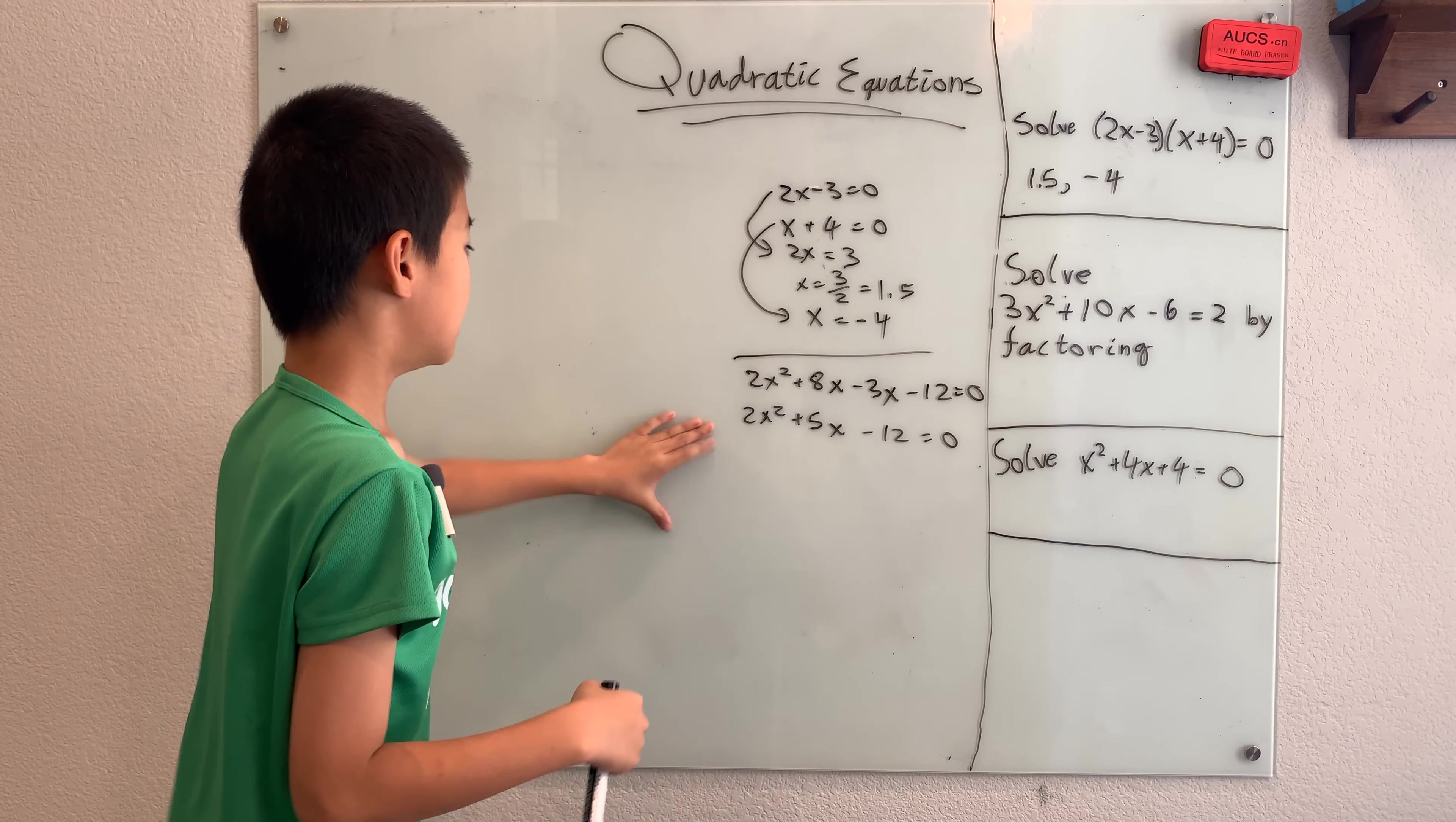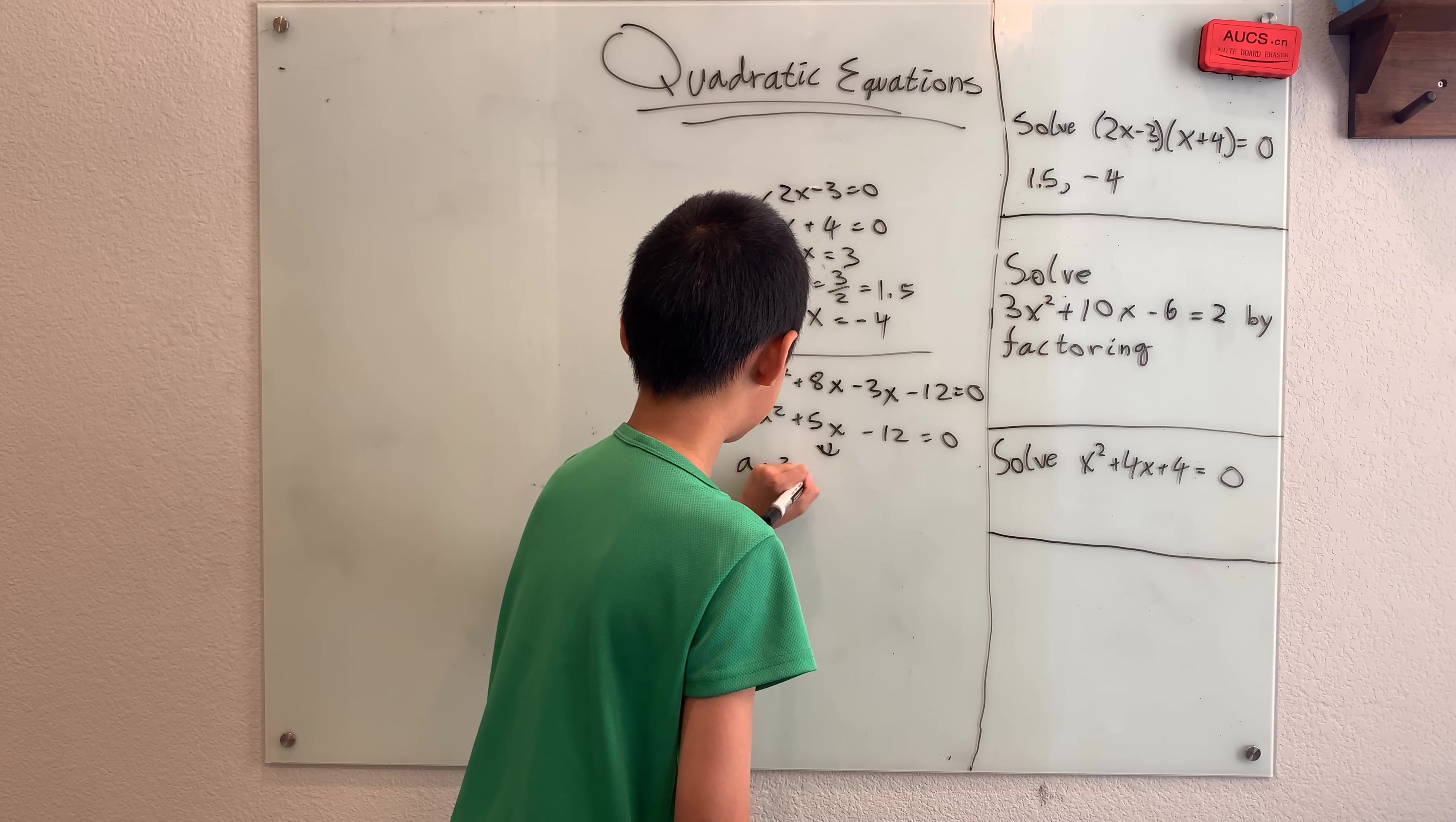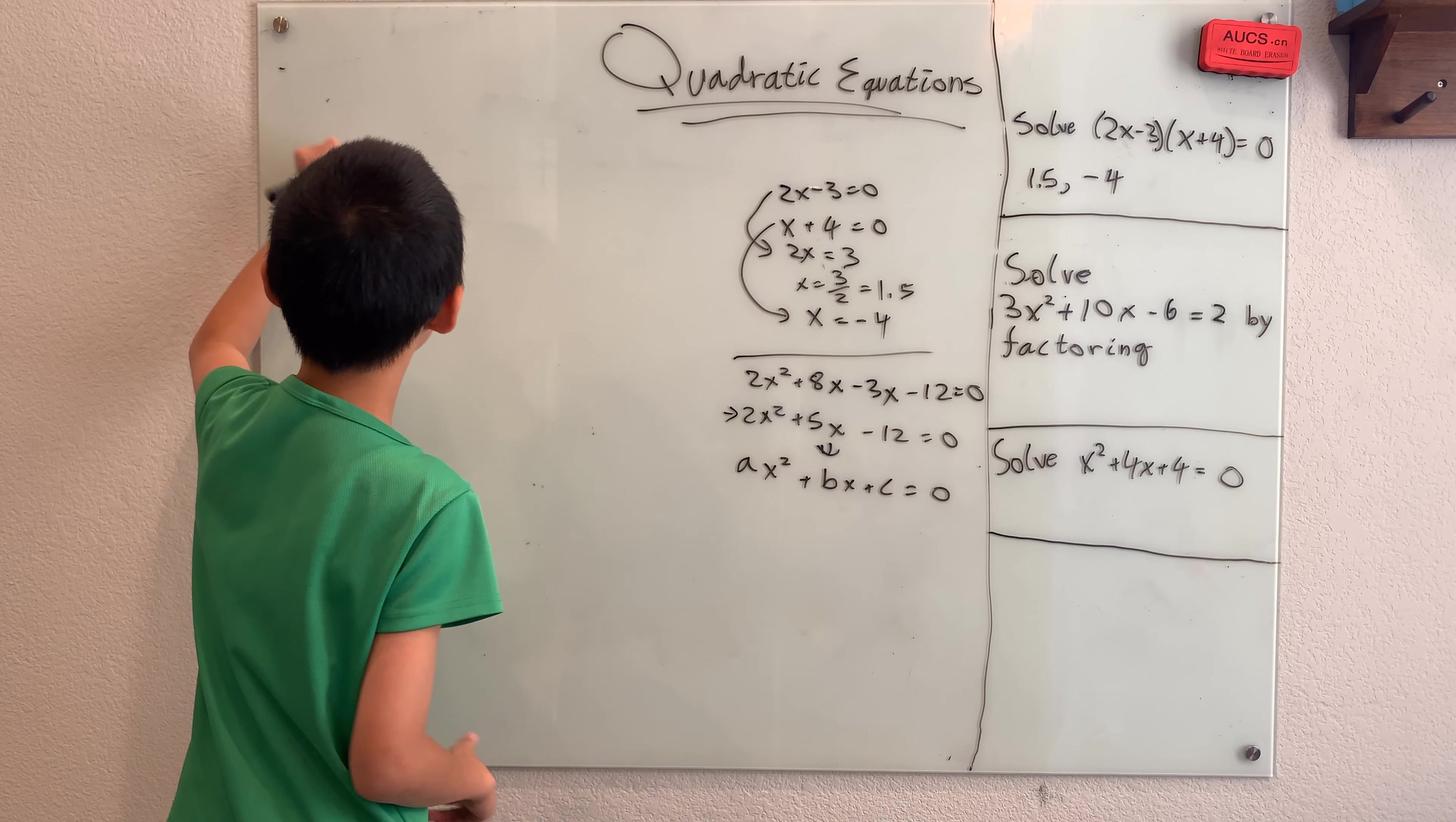So basically, the moral of the story here is when you have a quadratic equation in the standard form, or something that's called general form, in this general form, standard form, it's ax squared plus bx plus c equals 0. So when you have a quadratic equation in this, it's not so easy to solve. You can't exactly see how to solve this equation, just looking at it.